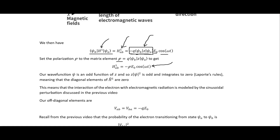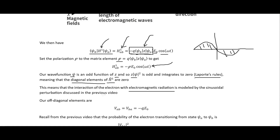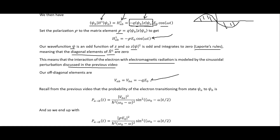Our wave function psi is an odd function, so it has odd parity in z. This means z times the square of our wave function is odd and integrates to zero — that is Laporte's rule. Because the function is odd, the positive and negative contributions cancel each other out, so we get zero. This means the diagonal elements of the matrix are zero, and the interaction of the electron with electromagnetic radiation is modeled by the sinusoidal perturbation from the previous video, with the off-diagonal elements equal to our expression.